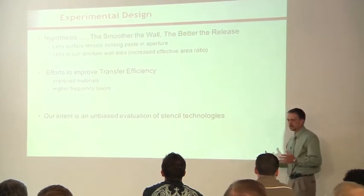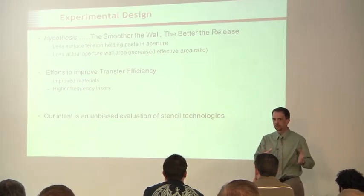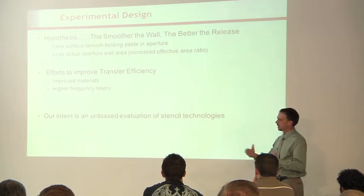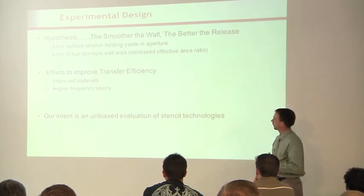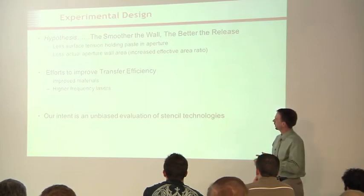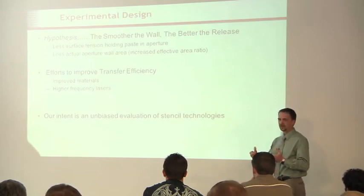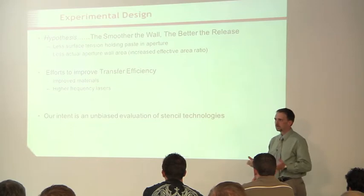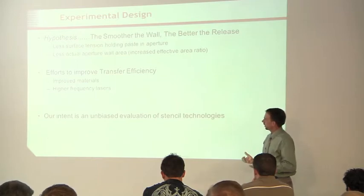Our experimental design. We set this up to look at several different factors to try to determine what we can do to address this problem. Now, our hypothesis going into this was a smoother stencil aperture wall is going to give us a better paste release. That's kind of the assumption out there in the industry. You look at the surface area of the wall. You want to see a nice, flat, smooth wall, and that should correlate to a nice paste release. So, that was our hypothesis going into this. You have less surface tension holding the paste in the aperture, because you have less of that scalloping shape on the side walls. And also, there's less physical area there, too. When you think about it, if you've got that scallop texture, if you start adding up all the different waves in that side wall, effectively you're going to have more surface area there when you have a rougher wall. So, smoother walls should give less actual aperture wall area and should increase our release.